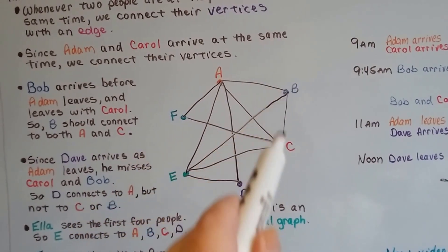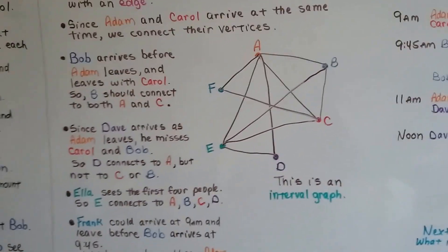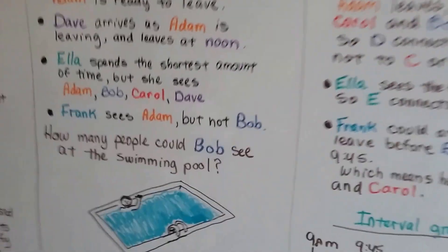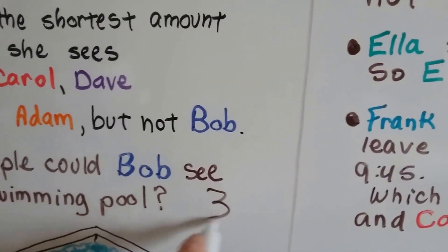He's got one, two, three. That means Bob could see three people.